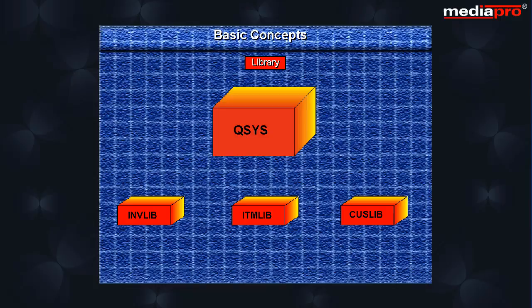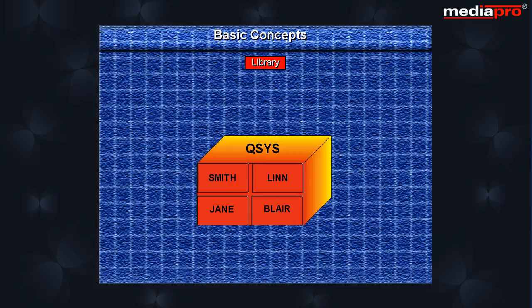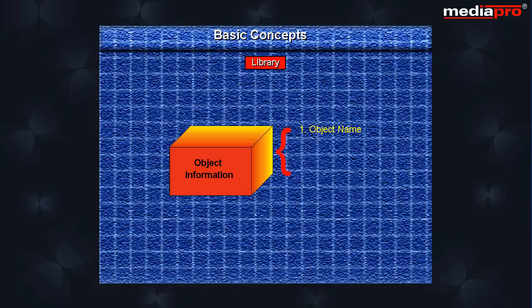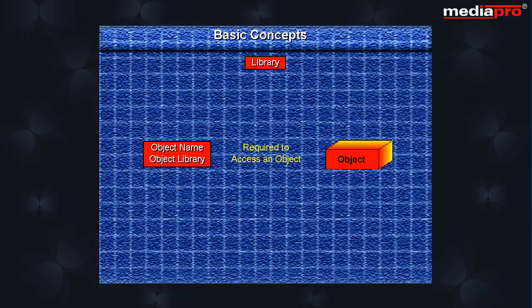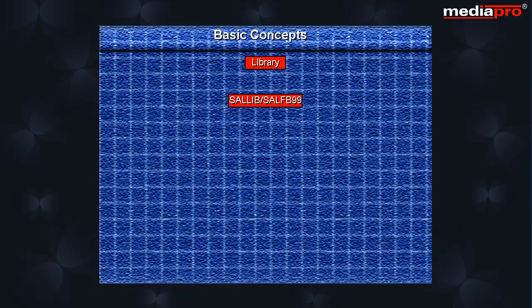The AS400 library differs from PC and Unix directories in that it has a single-level hierarchy, as compared to the multi-level hierarchy followed by PC and Unix systems. This means a library on the AS400 cannot contain another library but can only contain other objects. However, there is an exception: the QSYS library is a special library that can reference other libraries. Some AS400 objects such as user profiles can only be located in the QSYS library. An object is uniquely identified by a combination of object name, library name, and object type. Hence, two objects in the same library can have the same name provided they are not of the same type. To access an object we have to specify both the object name as well as the library — this is called a qualified name for an object.